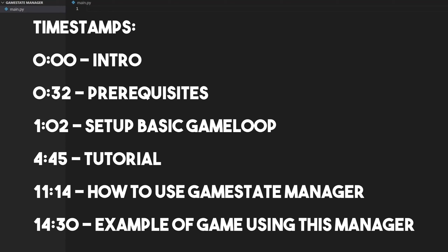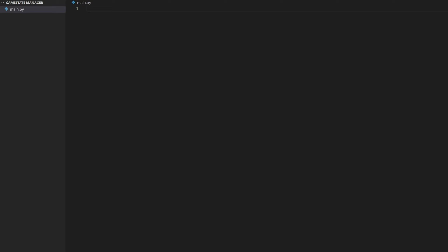Hello and welcome to this PyGame tutorial. Today I'm going to be showing you how to create a Game State Manager for your PyGame game. What is a Game State Manager? It basically manages the states inside of your game. For example, when you load up a game, you usually aren't just thrown into the game itself — you have a start screen, some menus, or some cut scenes before you get to the actual game. And the Game State Manager is what manages which state you are currently in.